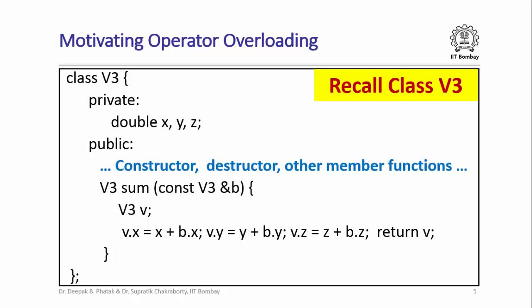Let us recall the class V3 for representing three-dimensional vectors that we have been studying over the last few lectures. This class has three data members named X, Y, and Z, all of type double and declared private. It has several constructor, destructor, and other member functions that we have studied over the last few lectures.